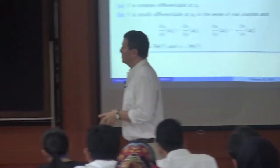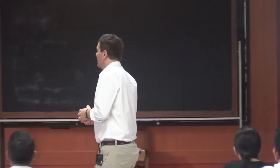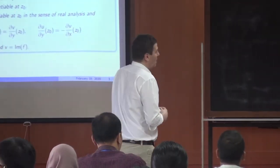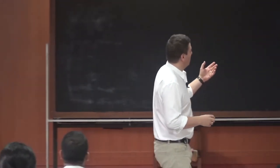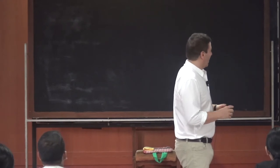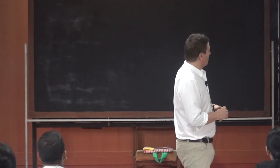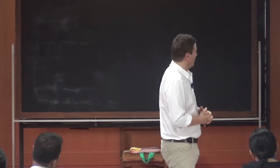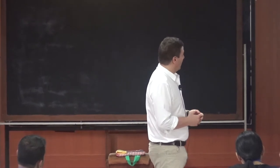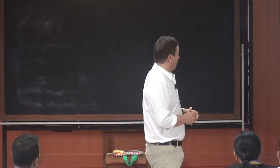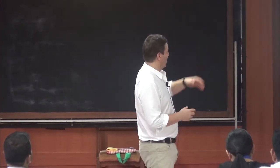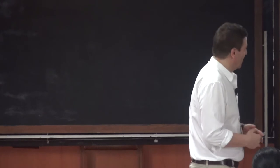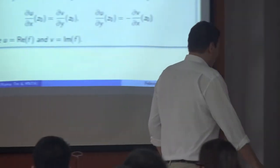The first thing usually proved is that requiring a function to be complex differentiable at one point is equivalent to requiring that f is totally differentiable in the sense of real analysis when you think of ℂ as ℝ², but you also have the partial differential equations called the Cauchy-Riemann equations: the derivative with respect to x of the real part of f equals the derivative with respect to y of the imaginary part, and the derivative of the real part with respect to y is minus the derivative of the imaginary part with respect to x. These are pretty strong relations.